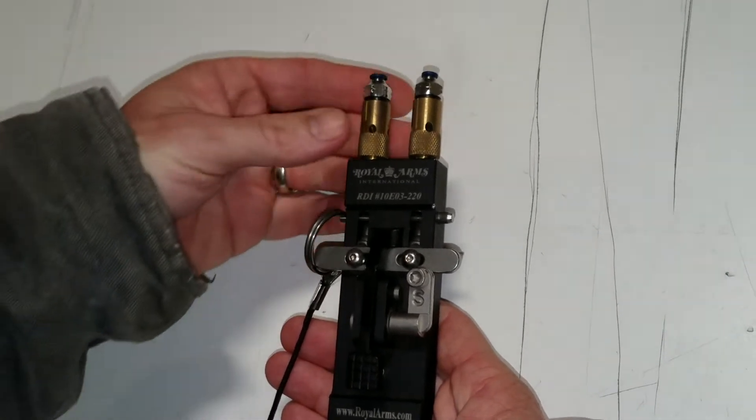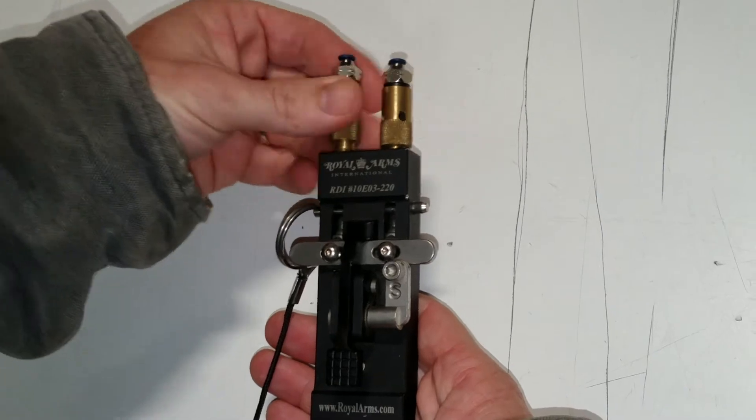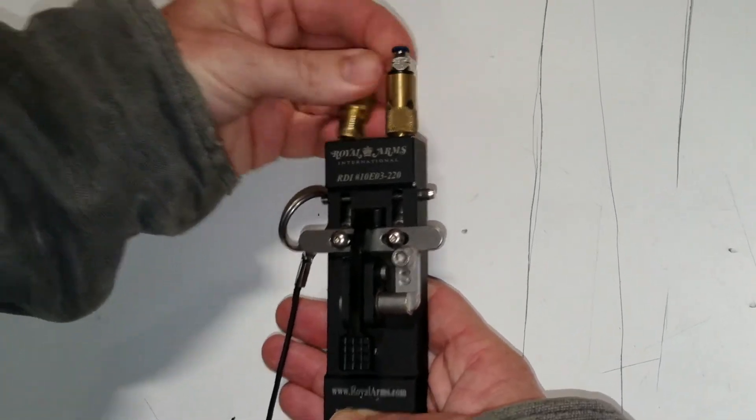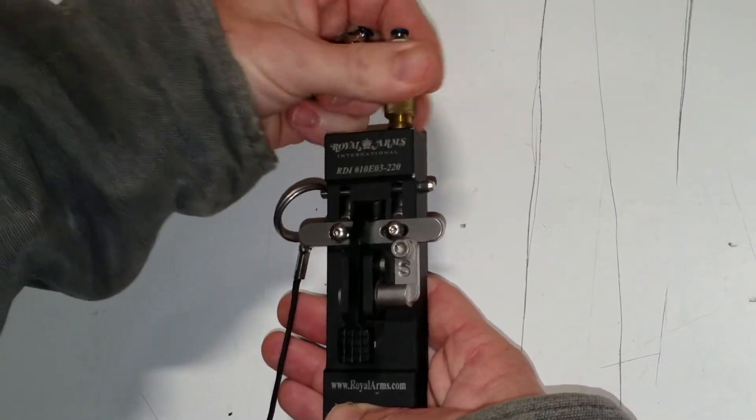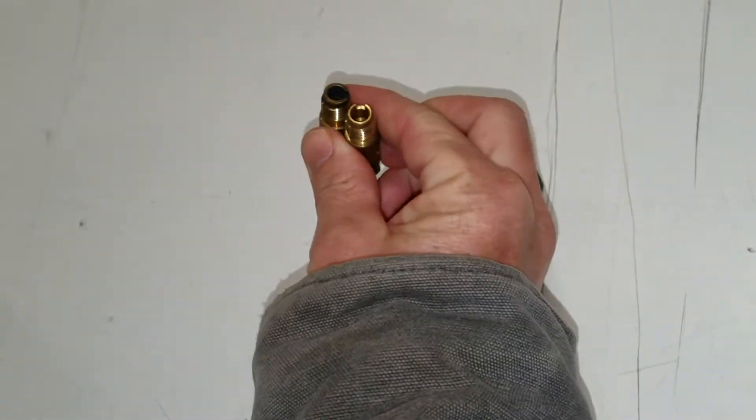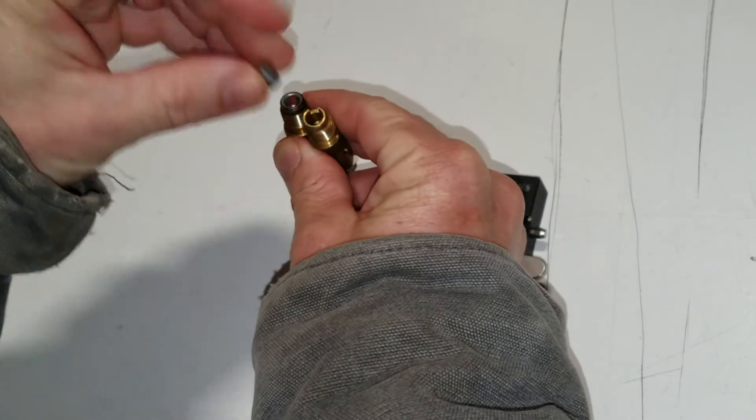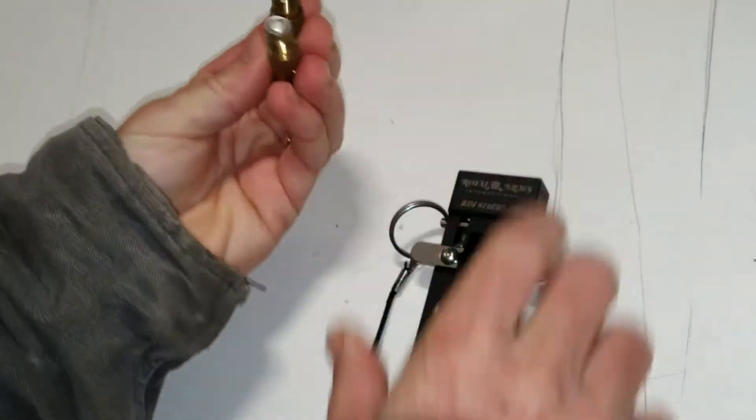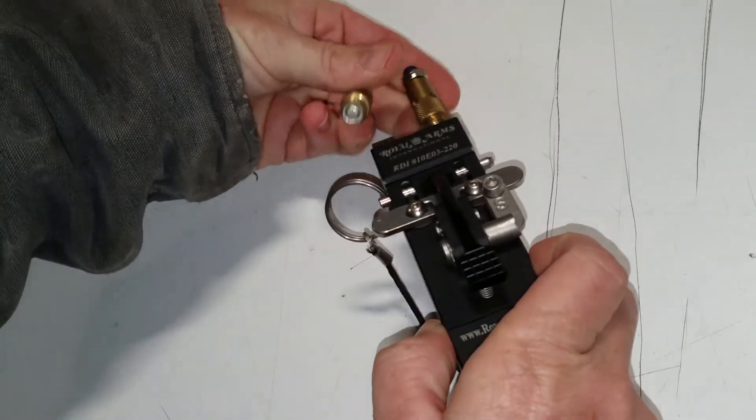The first thing you're going to want to do is remove the brass heads from both sides. This is where you're going to place the 209 primers. Then you're going to screw them all the way back in.